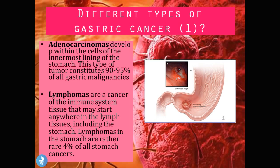The first type of gastric cancer is adenocarcinoma, which develops within the cells of the innermost lining of the stomach. This type constitutes 90 to 95% of all gastric malignancies, making it the most common type. On endoscopic view you can see the tumor growing out of that mucosal layer.